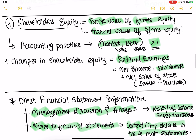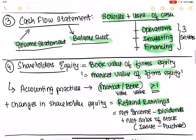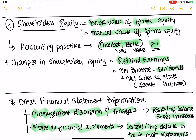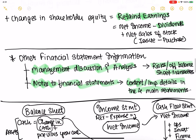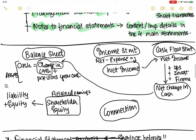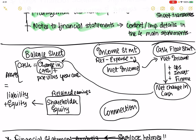Although we've seen some of this, remember there is a whole class needed just to go over these four different statements and how to interpret them. To quickly recap: the balance sheet, income statement, cash flow statement, and shareholders' equity are connected in the following way.